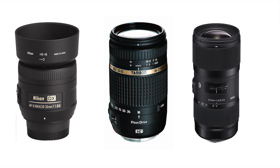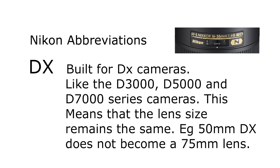DX means that the lens is built for DX cameras, like the D3000 series, the D5000 series, or the D7000 series. They tend to be smaller and lighter than FX lenses. The focal length doesn't change when you put it onto a DX camera. This is important because if you have an FX lens and you put it onto a DX camera, there's a multiplication of the focal length by 1.5. So if you put a 50mm lens on, it becomes a 75mm lens. If it's a DX lens on a DX camera, a 50mm lens stays at 50mm — that's why the DX abbreviation is important to look out for.